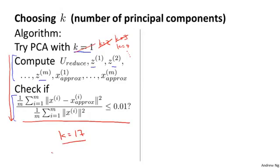But as you can imagine, this procedure seems horribly inefficient. We're trying k equals 1, k equals 2, we're doing all these calculations. Fortunately, when you implement PCA, it actually in this step gives us a quantity that makes it much easier to compute these things as well.